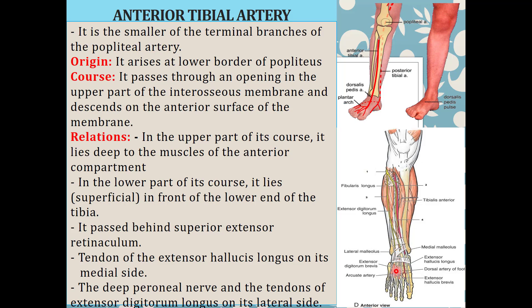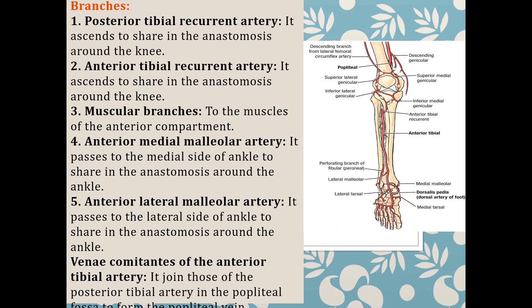The branches of the anterior tibial artery include, first, the anterior tibial recurrent artery, which ascends to share in the anastomosis around the knee joint. There is also a posterior tibial recurrent artery on the posterior side, which also shares in the anastomosis around the knee joint. Then there are muscular branches which supply the muscles of the anterior compartment of the leg.